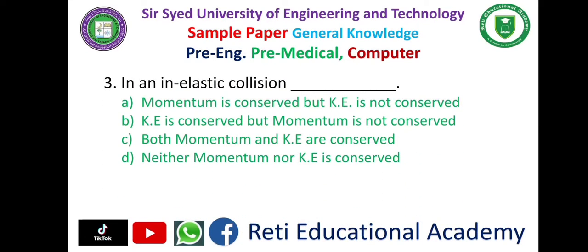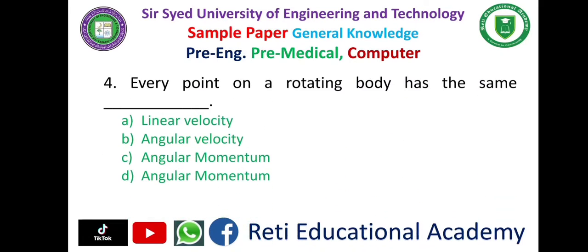Question number 3: In an elastic collision — A. Momentum is conserved but kinetic energy is not conserved, B. Kinetic energy is conserved but momentum is not conserved, C. Both momentum and kinetic energy are conserved, D. Neither momentum nor kinetic energy is conserved. The correct answer is C: Both momentum and kinetic energy are conserved.